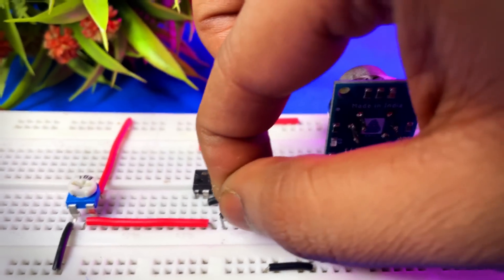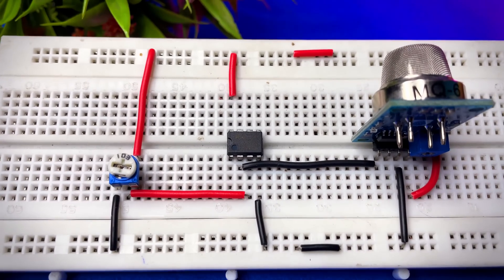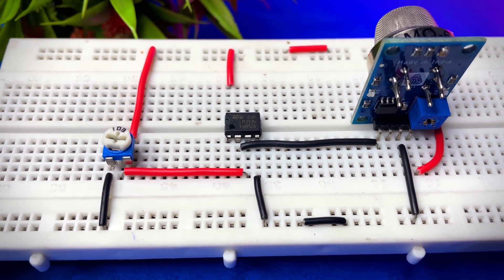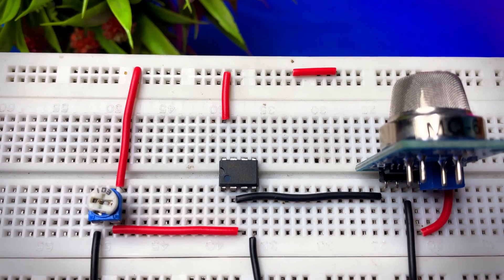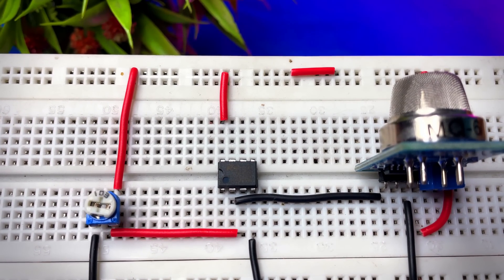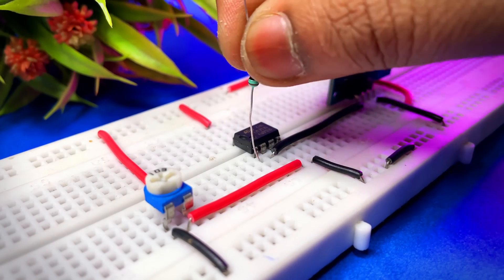LM393 is an 8-pin IC whose pin 4 is ground and pin 8 is VCC. As you can see I have connected it in positive negative rail. Now the problem is this IC is a common collector IC, so its output always be low.